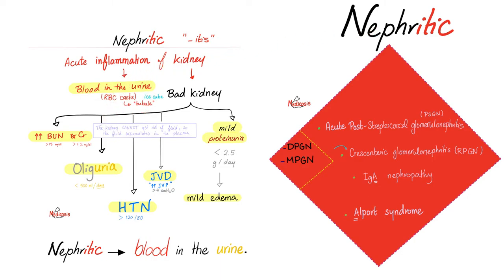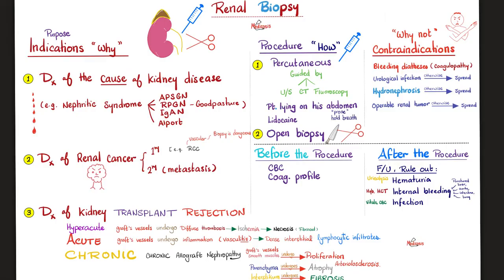But that's not the only thing. We have hematuria, we have oliguria, we have mild edema and proteinuria. We have jugular venous distension and hypertension, as well as high BUN and creatinine.